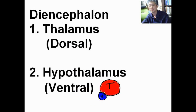The diencephalon has got two parts. The thalamus, the dorsal part. The hypothalamus, the ventral part.